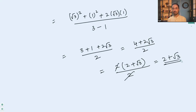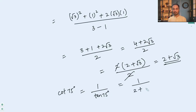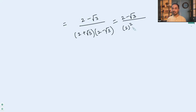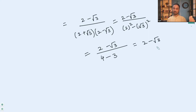Now we need to find cot 75°, which equals 1/tan 75° = 1/(2 + √3). We rationalize the denominator by multiplying numerator and denominator by (2 − √3). The numerator becomes 2 − √3, and the denominator is (2 + √3)(2 − √3) = 2² − (√3)² = 4 − 3 = 1. So cot 75° = (2 − √3)/1 = 2 − √3.